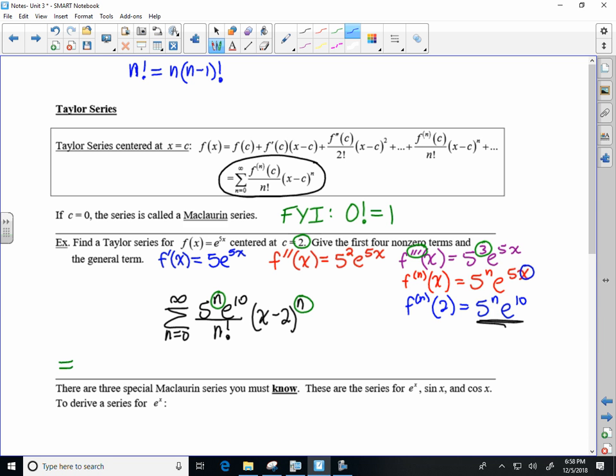So when I'm looking for a 0 factorial, if I put in a 0 for n here, I get a negative 1 factorial, that doesn't make sense. You can't have a negative factorial. But what I can do is figure out what 1 factorial would be. So I'm replacing every n with a 1.